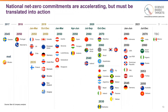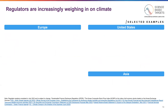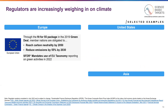One group that's particularly important are governments. National commitments are accelerating, and these are important signals to the business community that the world is moving toward a low-carbon future. However, many of these commitments are still in the early days — as of early 2022, only 10% of national commitments have been translated into law. Some regulators are increasingly weighing in with implications for companies' actions. The EU has long been a leader in carbon regulation, beginning with the establishment of the first international cap-and-trade program, the European Union Emissions Trading Scheme, in 2005.